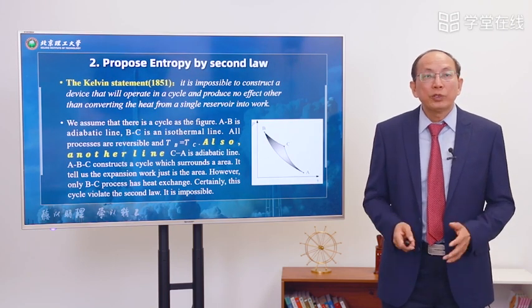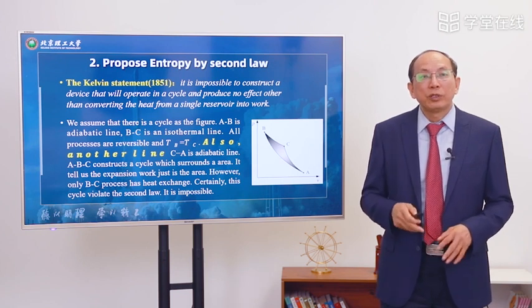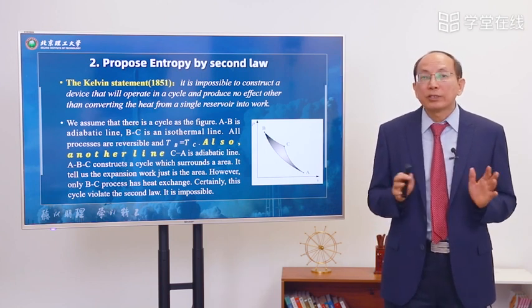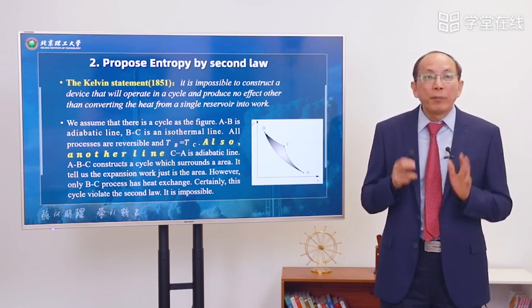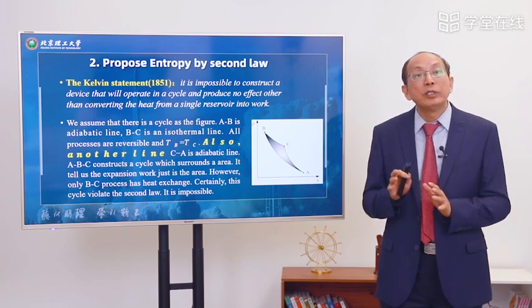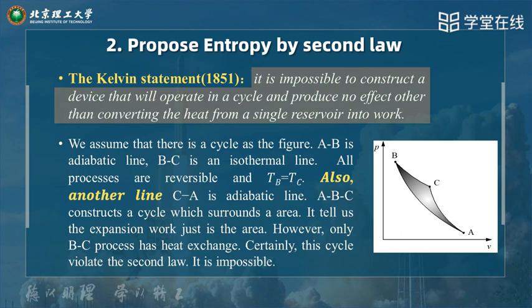Section 2: propose entropy by the second law. The previous section introduced entropy only from a guess, which may not be fully rigorous. In this section we propose entropy using the second law — perhaps more scientifically. The second law tells us it is impossible to construct a device that will operate in a cycle and produce no effect other than converting heat from a single reservoir into work. That is the Kelvin statement.